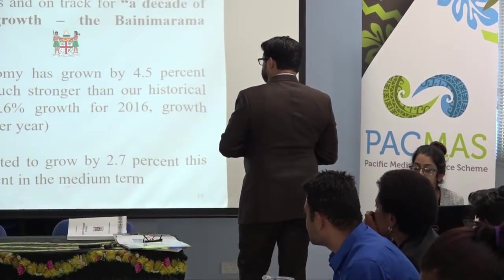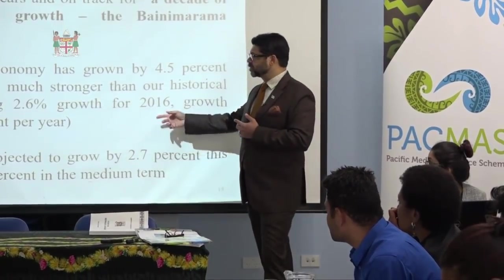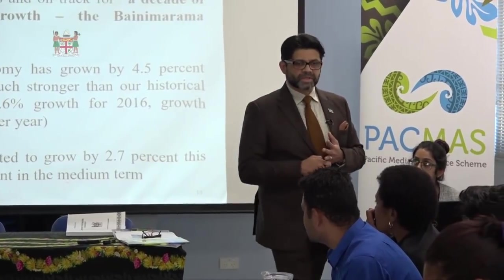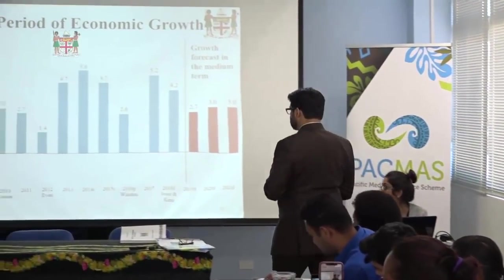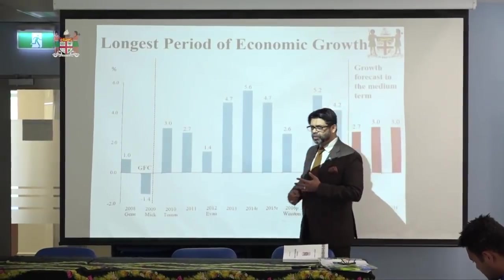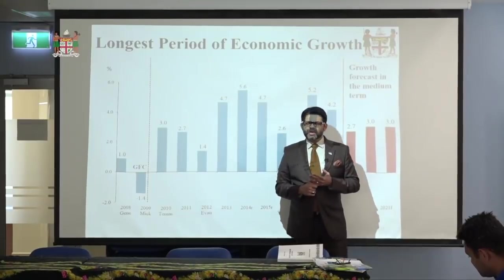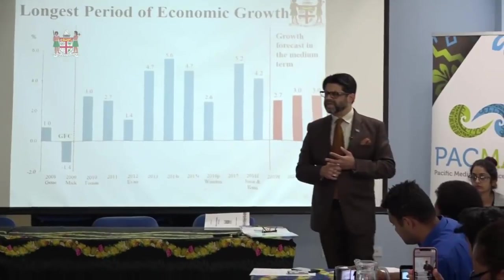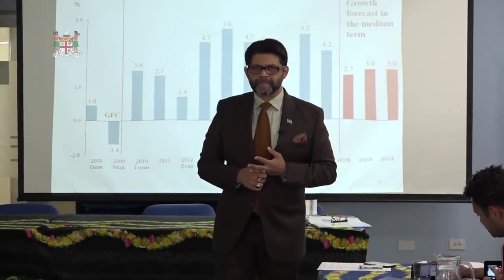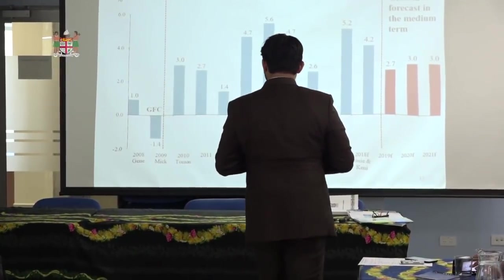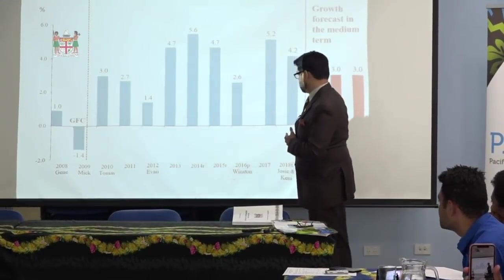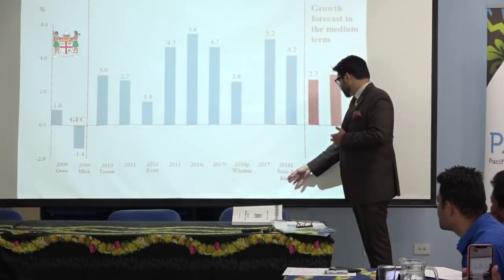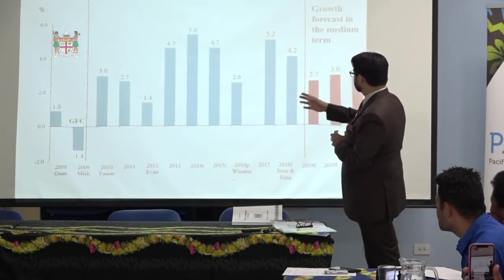We're projected to grow by 2.7% this year and around 3% in the medium term. Obviously it's slowed down, but it's growing. During the Global Financial Crisis, the US and other countries bailed out banks — we went to negative growth of -1.4%. But these are the years of growth. We had Thomas, Evan, Winston, Josie, and Kenny come through. The projected growth rate goes three years — you can't project longer than that.